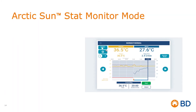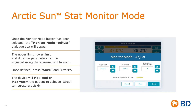Once the monitor mode button has been selected, the monitor mode adjust dialog box will appear. The upper limit, lower limit, and duration parameters can be adjusted using the arrows next to each. Once defined, press save and start.